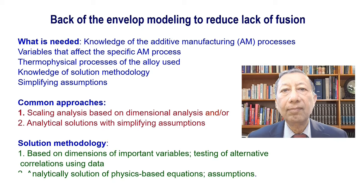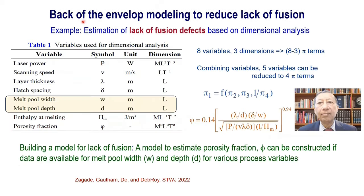There are two common approaches. One is called dimensional analysis, sometimes also called scaling analysis, based on the dimensions of the important variables. The second is analytical solutions with simplifying assumptions, like the heat conduction model. The solution methodology is based on the dimensions of the important variables, testing of alternative correlations using data, and also for physics-based equations, analytical solutions and their assumptions. For back of the envelope calculations of lack of fusion, the important variables, their units and dimensions are listed in this table.